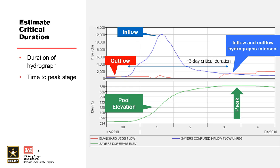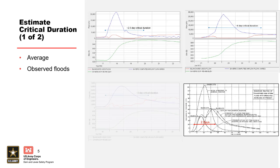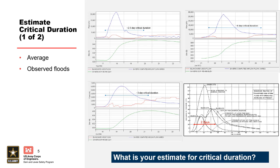Small to medium sized watersheds typically have critical durations on the order of days. Larger watersheds and snow melt driven watersheds typically have critical durations on the order of weeks to months. Since critical durations can vary, a good practice is to select a handful of the largest flood events to identify a typical or average critical duration.